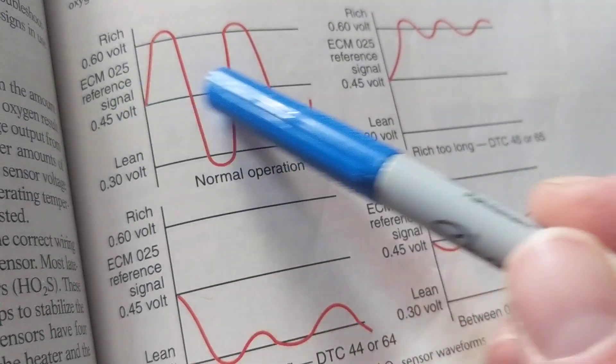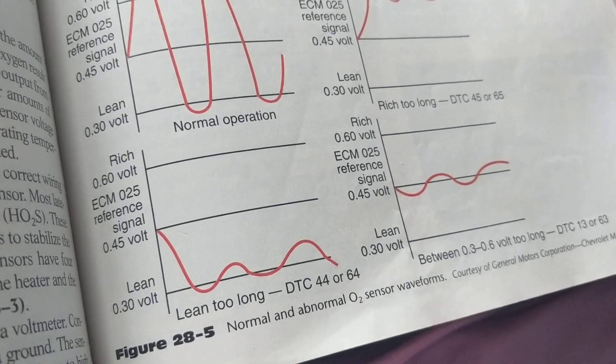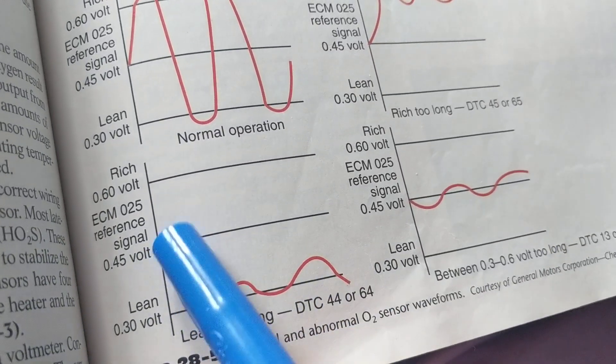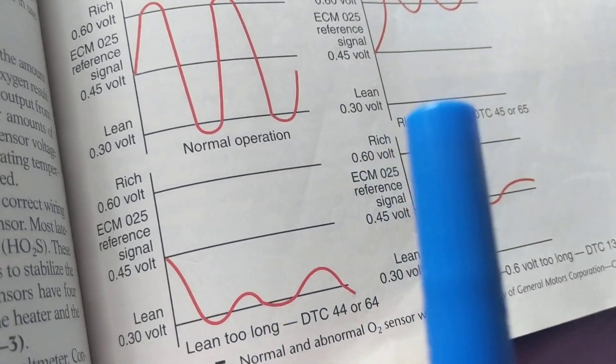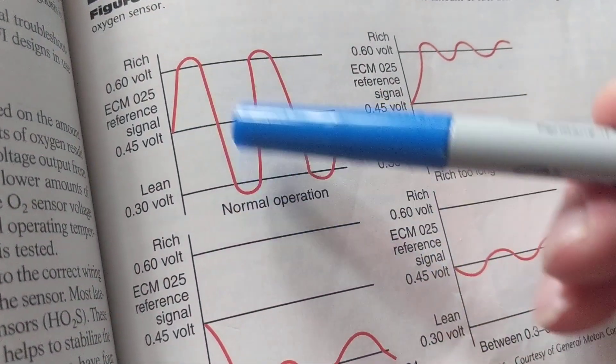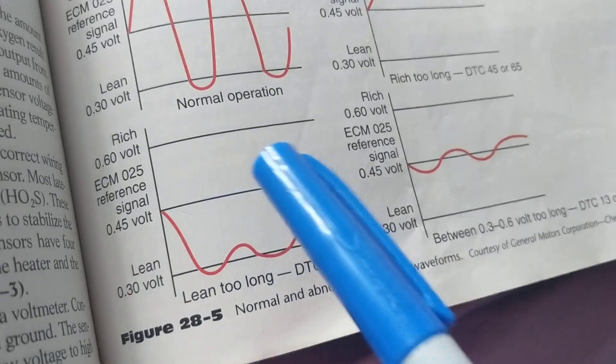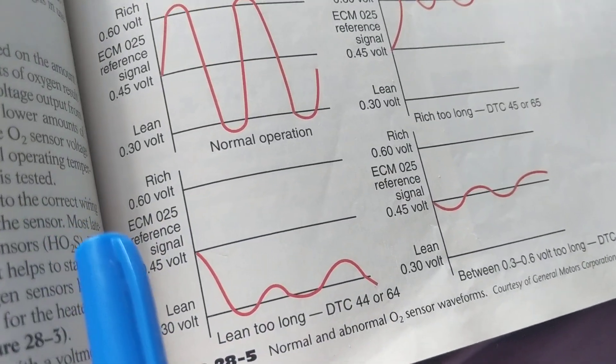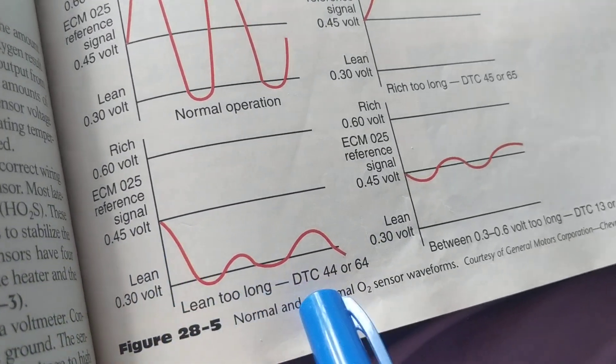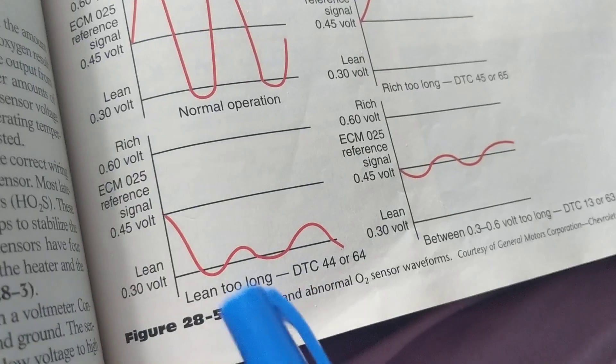Notice the difference. We're still 0.45, but what happened? Lean too long. This will give you diagnostic trouble codes, because it's always in the lean. You don't want that. That means something coming out is much too lean, too much air for too little fuel. We want to see this back and forth. Instead, we're only seeing too much air for too little fuel. That means the computer is not adjusting the fuel injectors. We have to adjust it by giving more fuel.